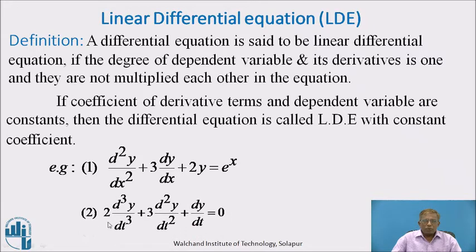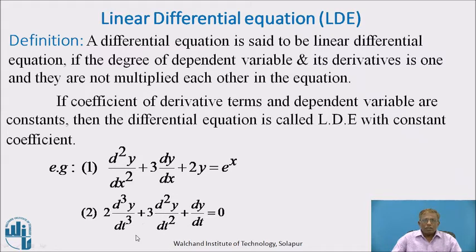Another example 2: 2(d³y/dt³) plus 3(d²y/dt²) plus (dy/dt) equals 0. Here y is the dependent variable and t is the independent variable. The derivatives of y are dy/dt, d²y/dt², and d³y/dt³. The degree of all three differential coefficients is 1, and they are not multiplied by each other. So this differential equation also belongs to linear differential equations. Again, the coefficients of the derivative terms are constant, so it is also called a linear differential equation with constant coefficients.